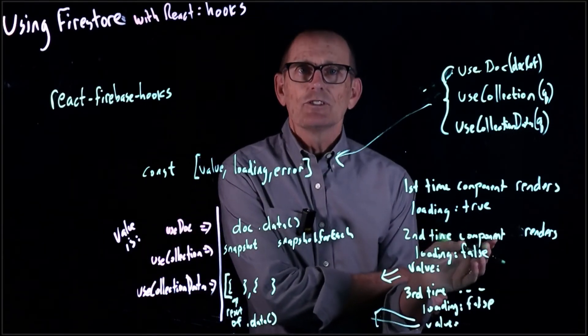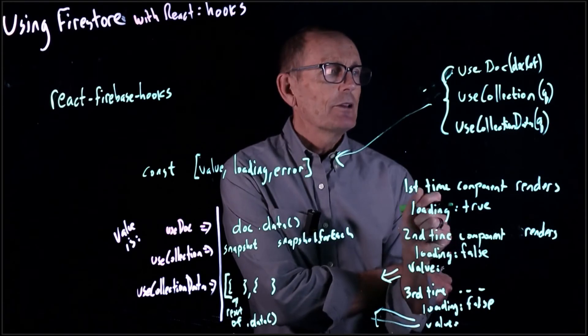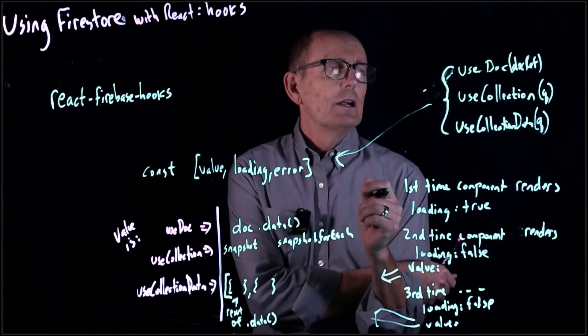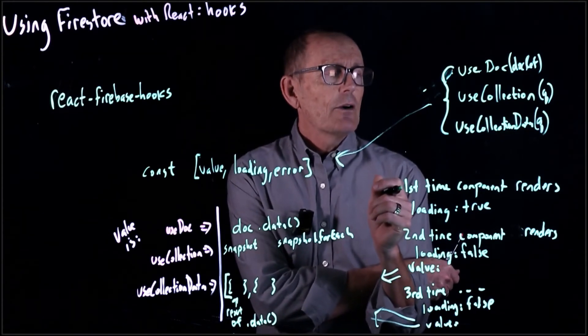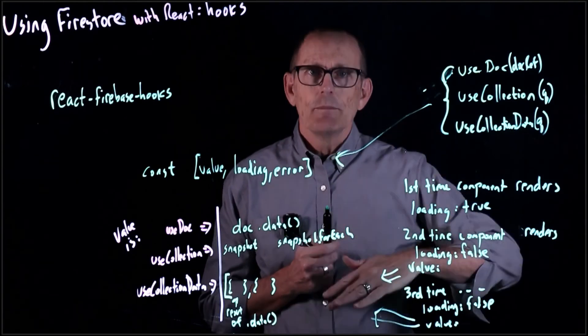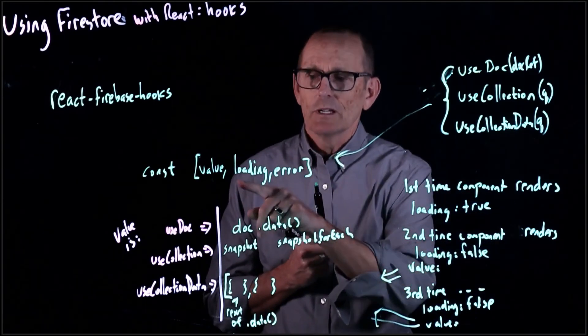Second and subsequent times, we know loading should be false, and then we're going to get our values. If we call, for instance, useCollectionData on our restaurants, then our component is going to, the first time it's going to render, and we should put up some sort of a loading, because loading is going to be true.